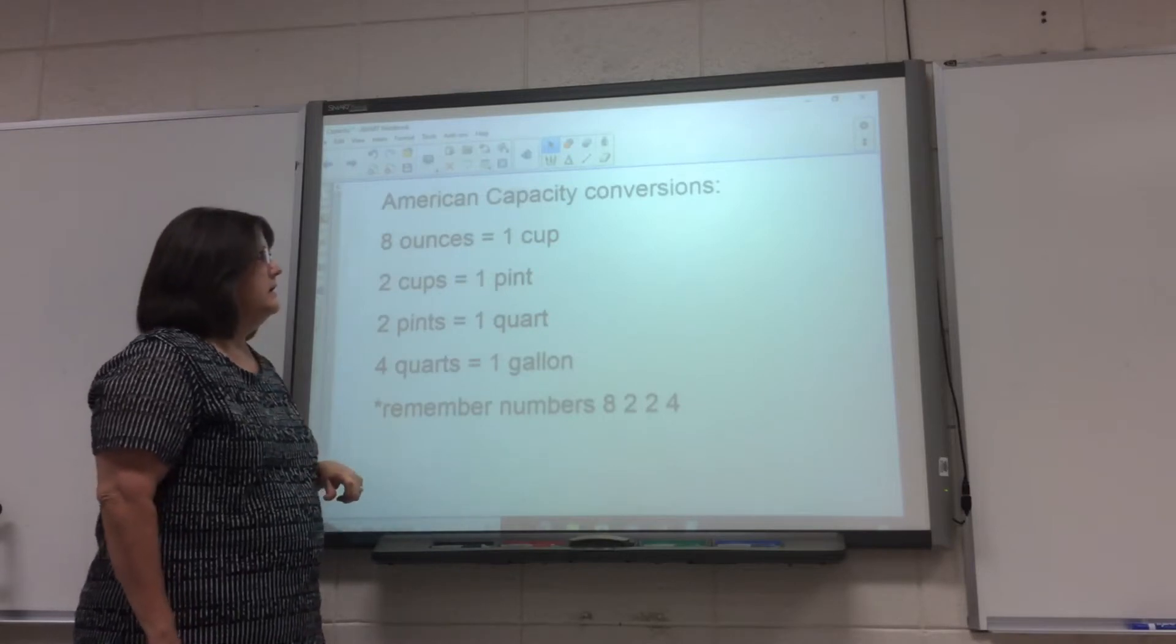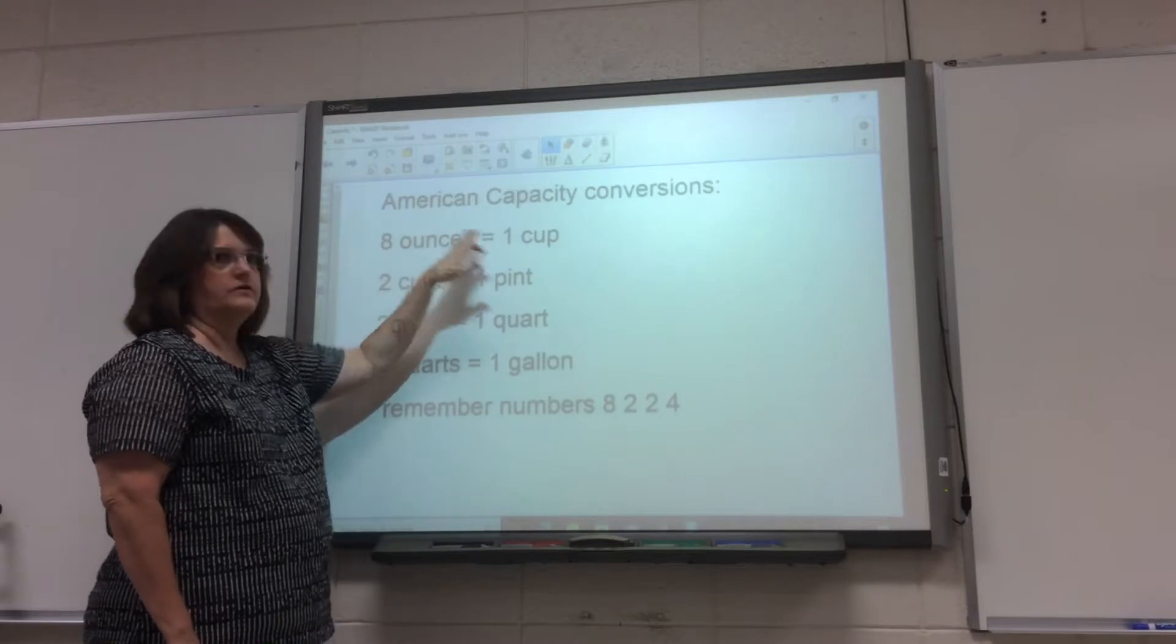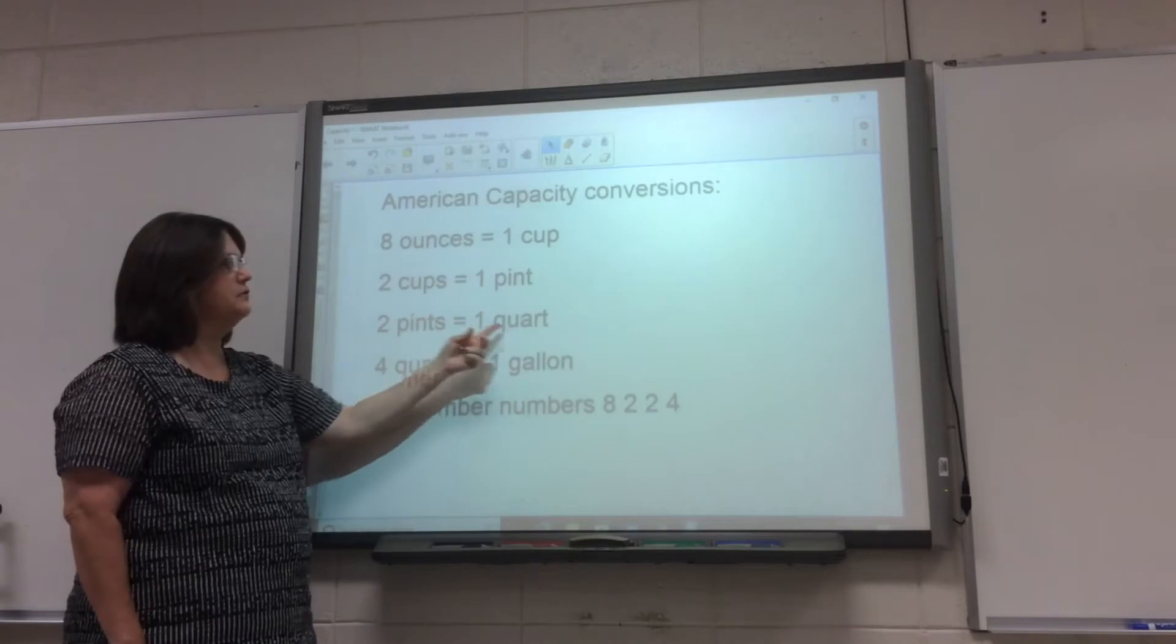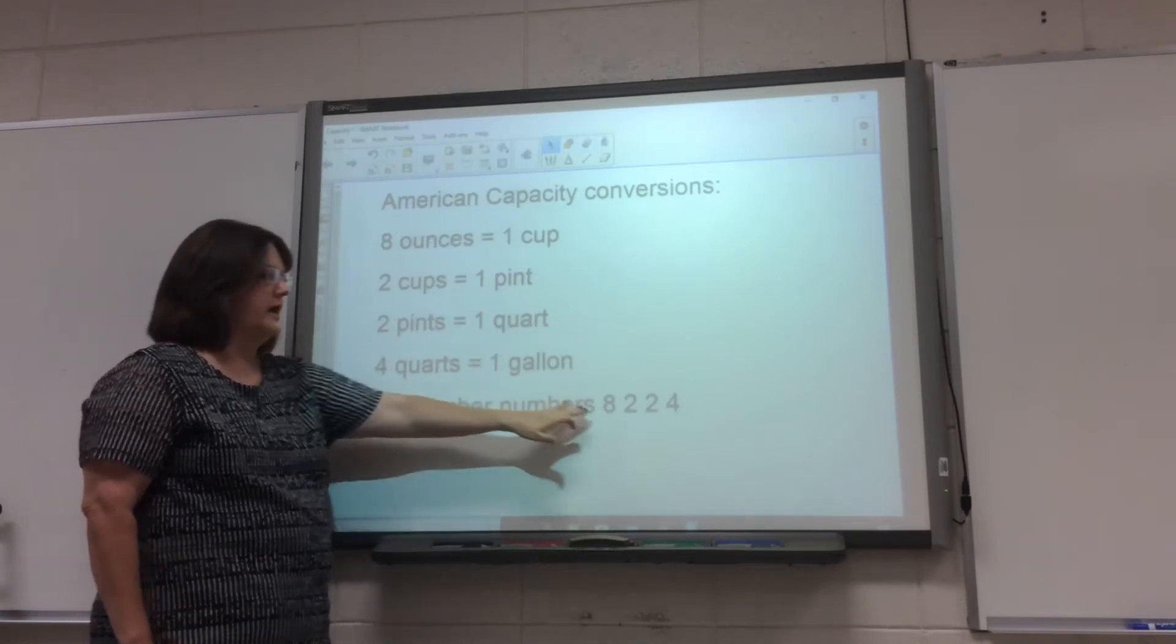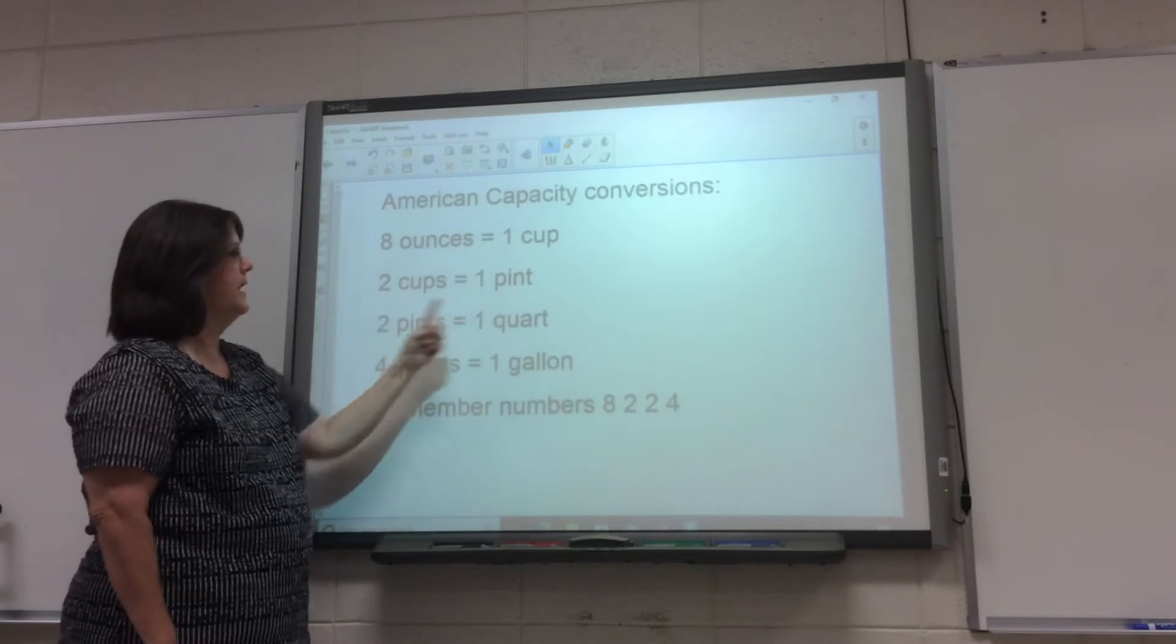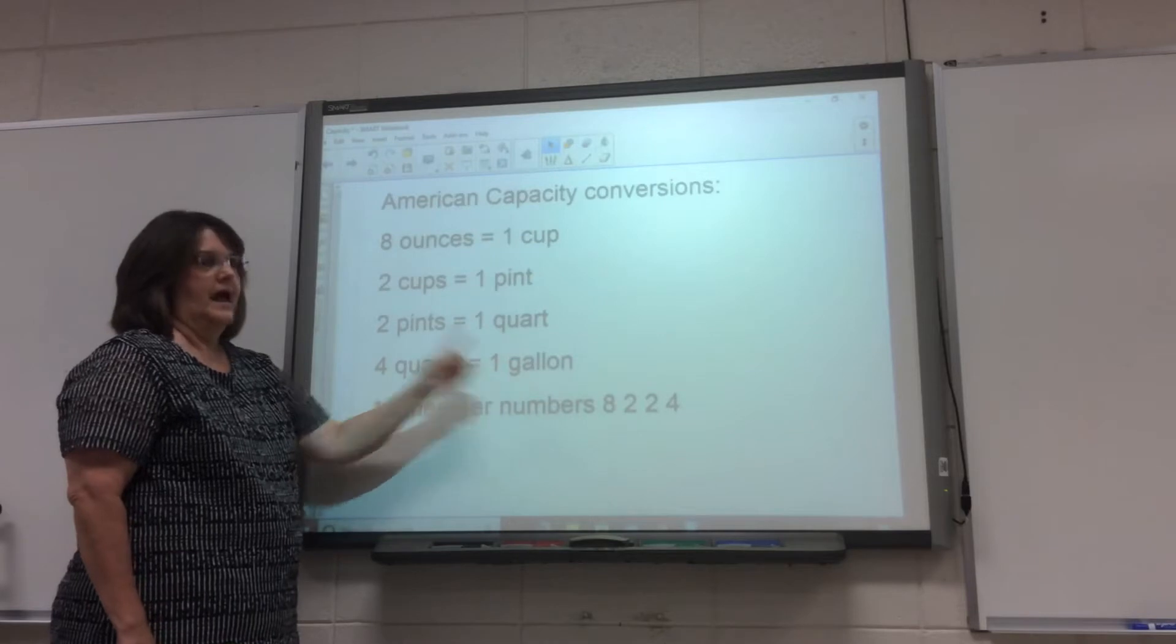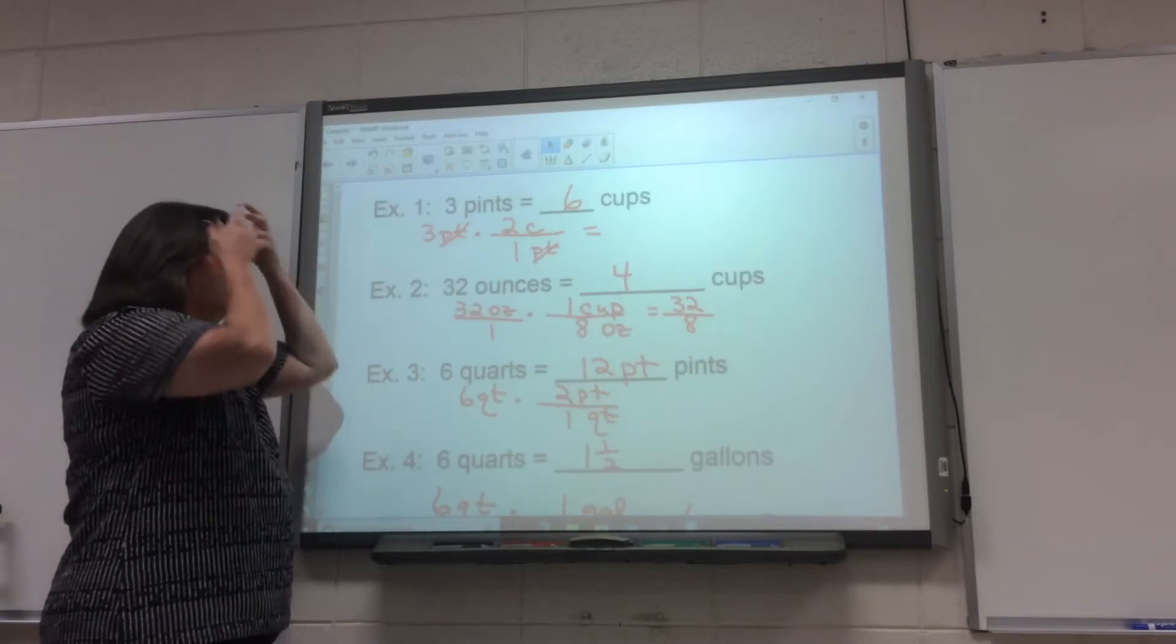All right, this is our capacity conversions. Eight ounces is equal to one cup, two cups equals one pint, two pints equals one quart, four quarts equals one gallon. Remember these numbers: eight, two, two, four. Eight ounces a cup, two cups a pint, two pints one quart, four quarts one gallon. You have to memorize these for the standard for the state. You'll see.